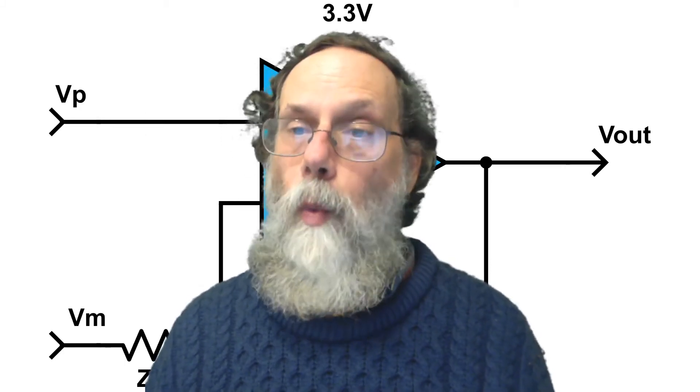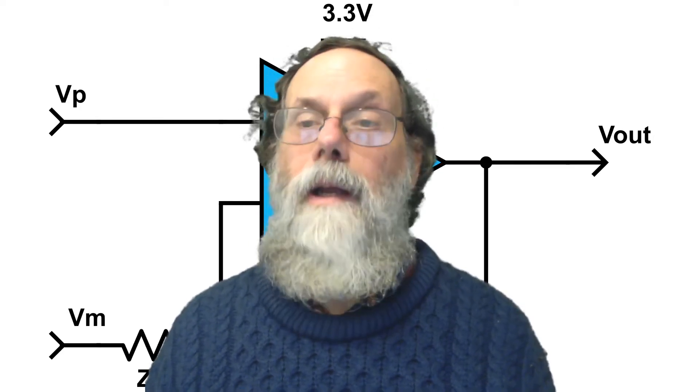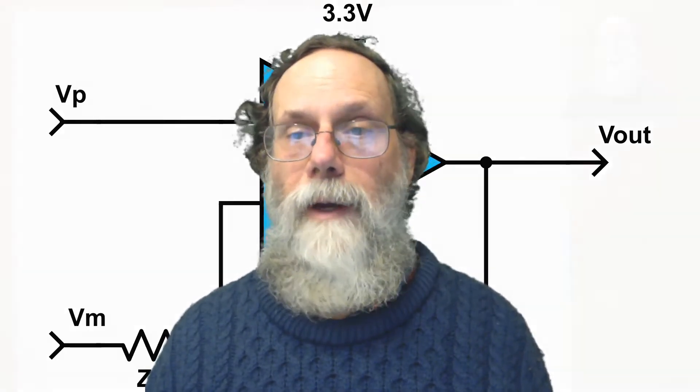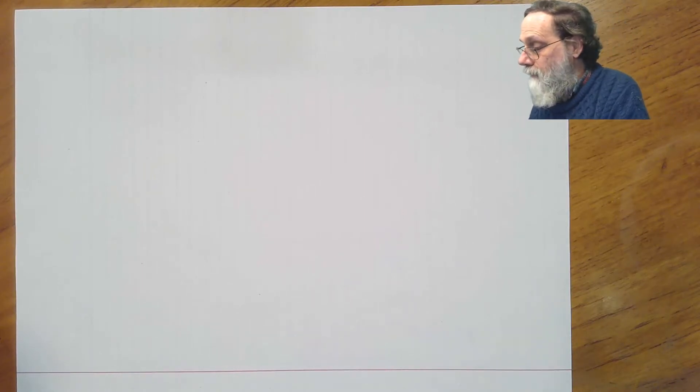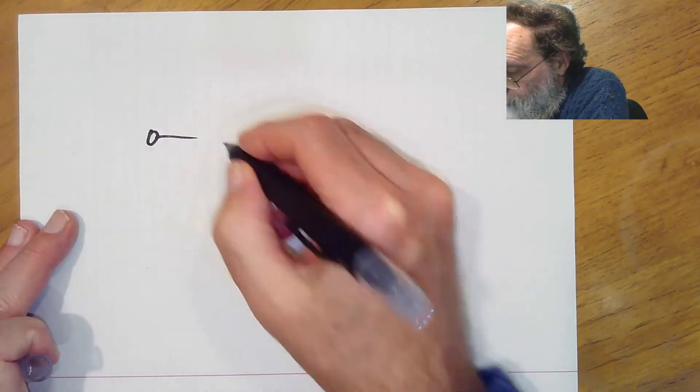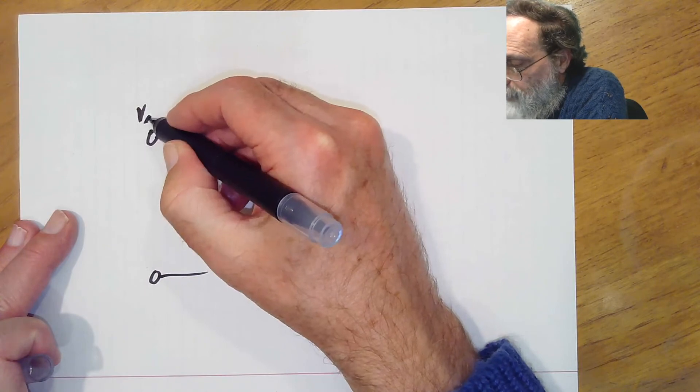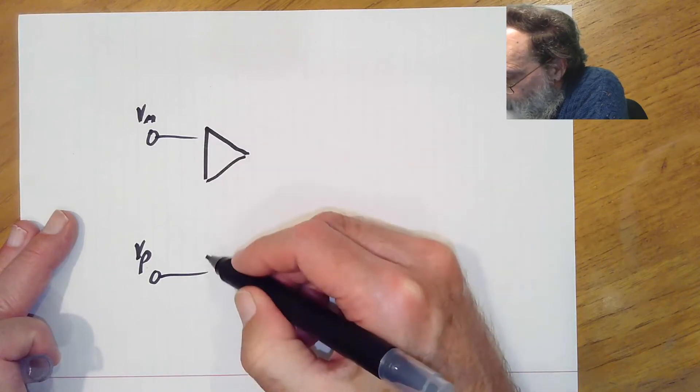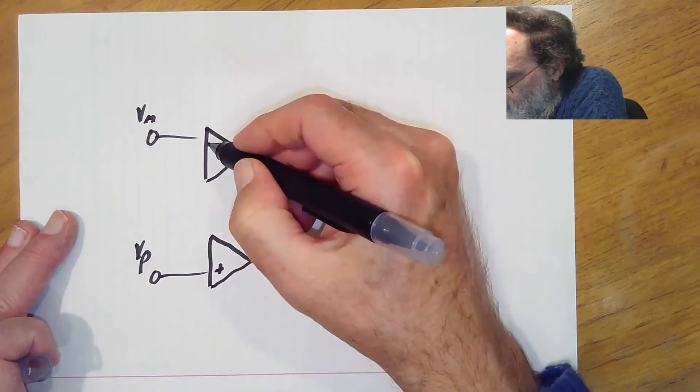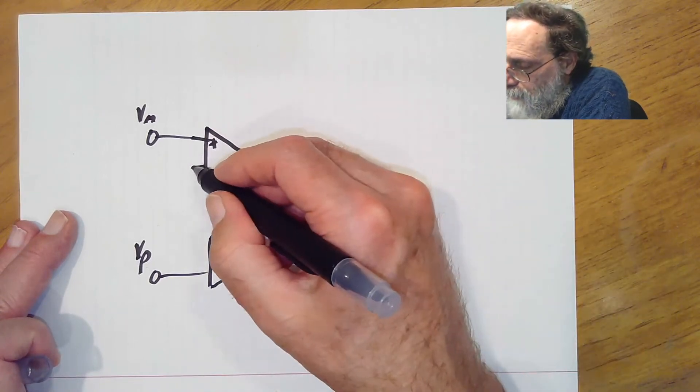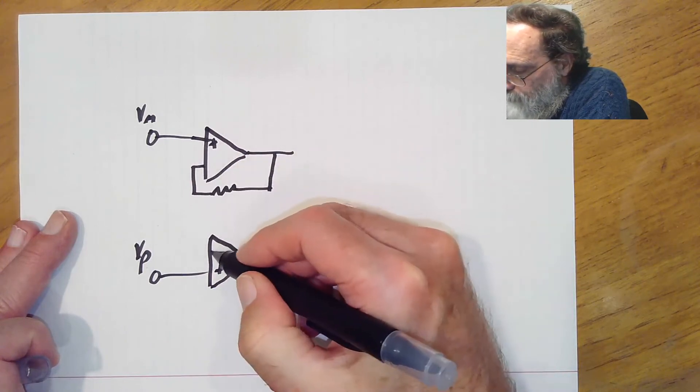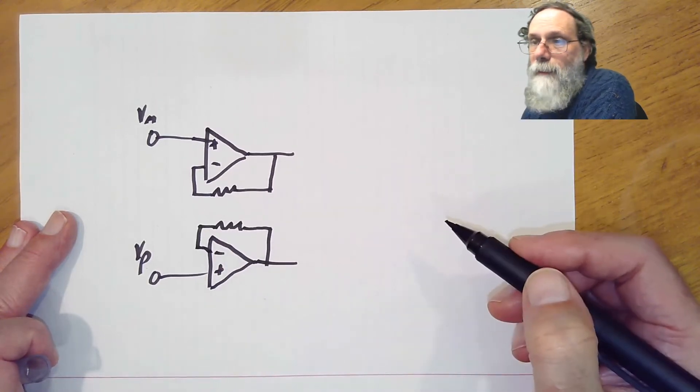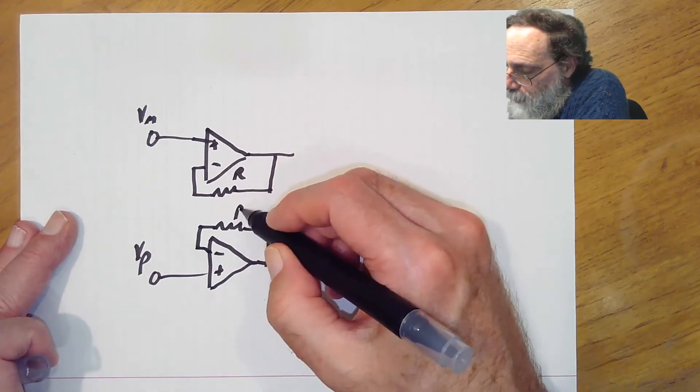The trick we use is to use one op-amp for each of the inputs, and that way we can have two high impedance inputs for the two inputs of our overall amplifier. Let's take a look at how that works. We start by saying two inputs. Let's call this one the M for the minus one, and this one the P for the positive one. Each of them we're going to put into an op-amp, and we're going to put it into the positive input of the op-amp, and we'll have the negative input in a feedback loop.